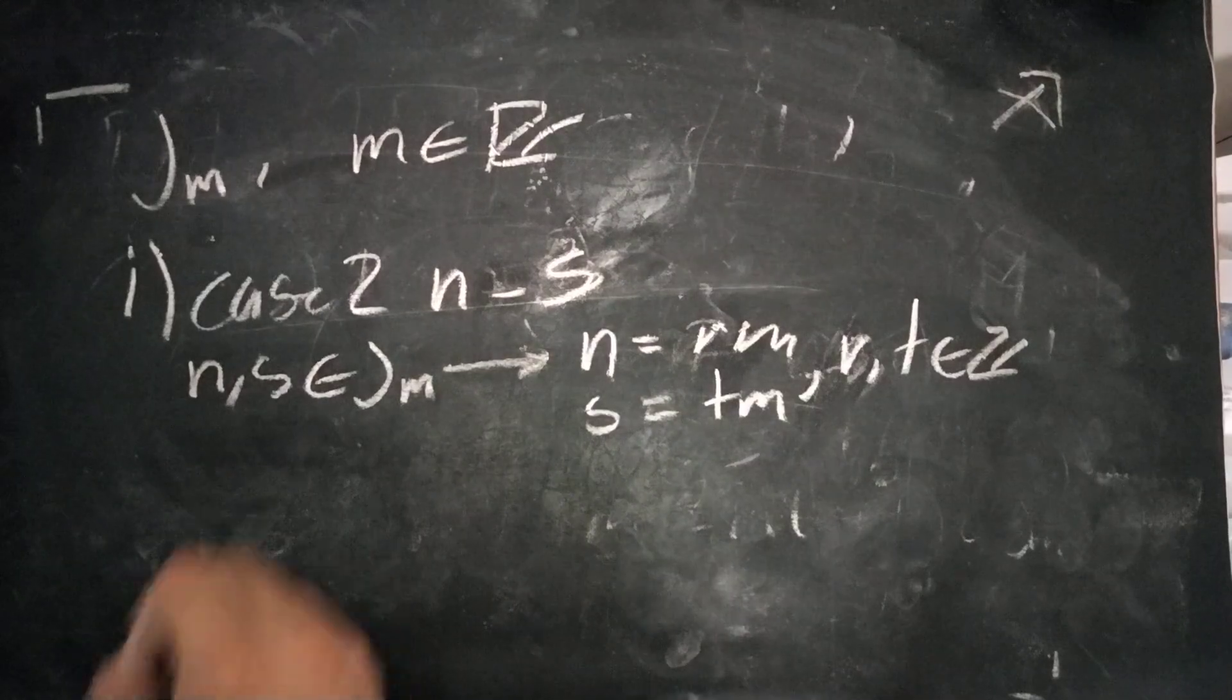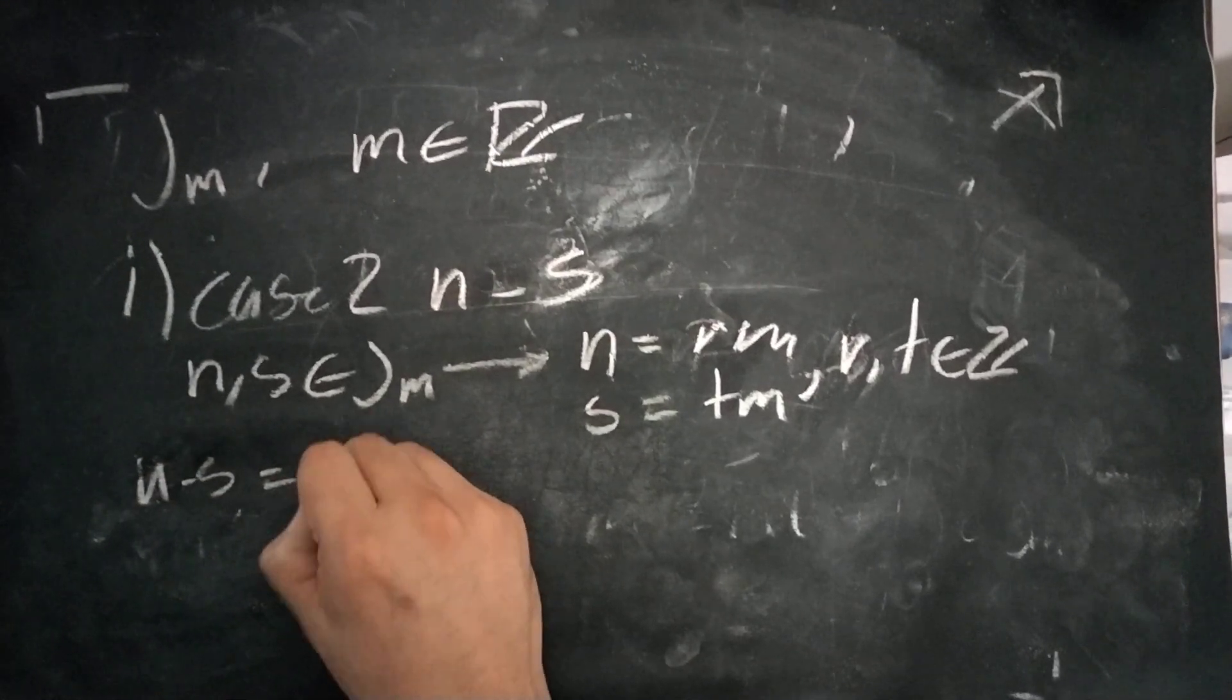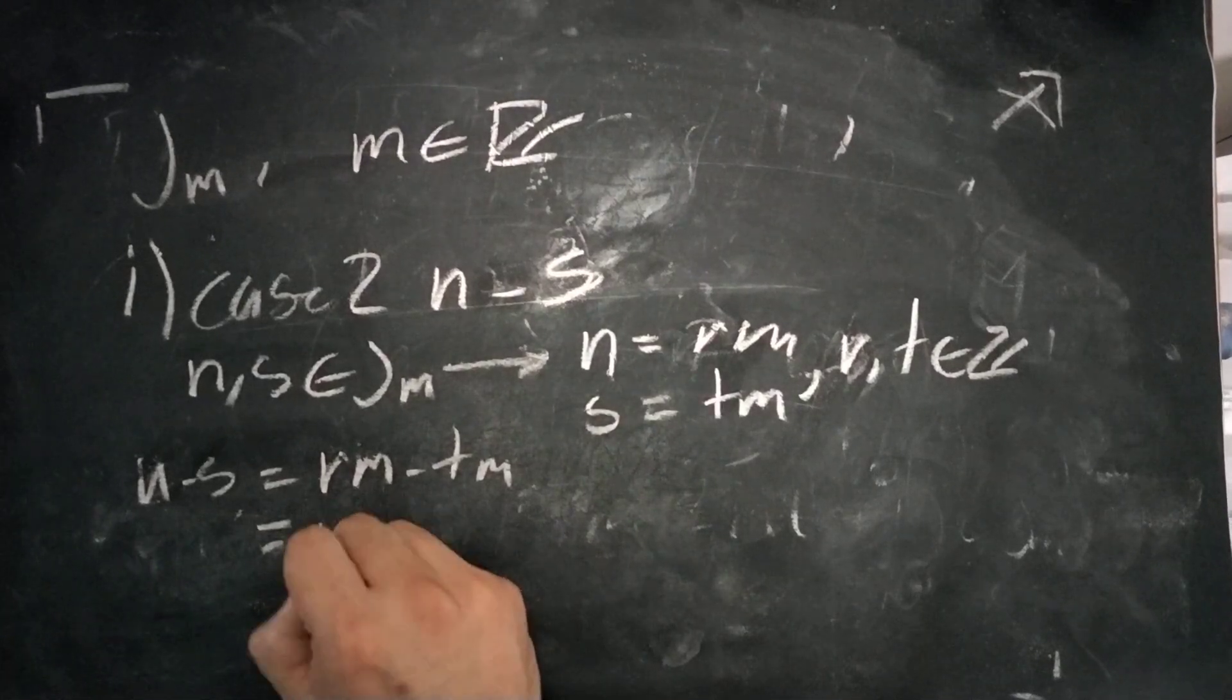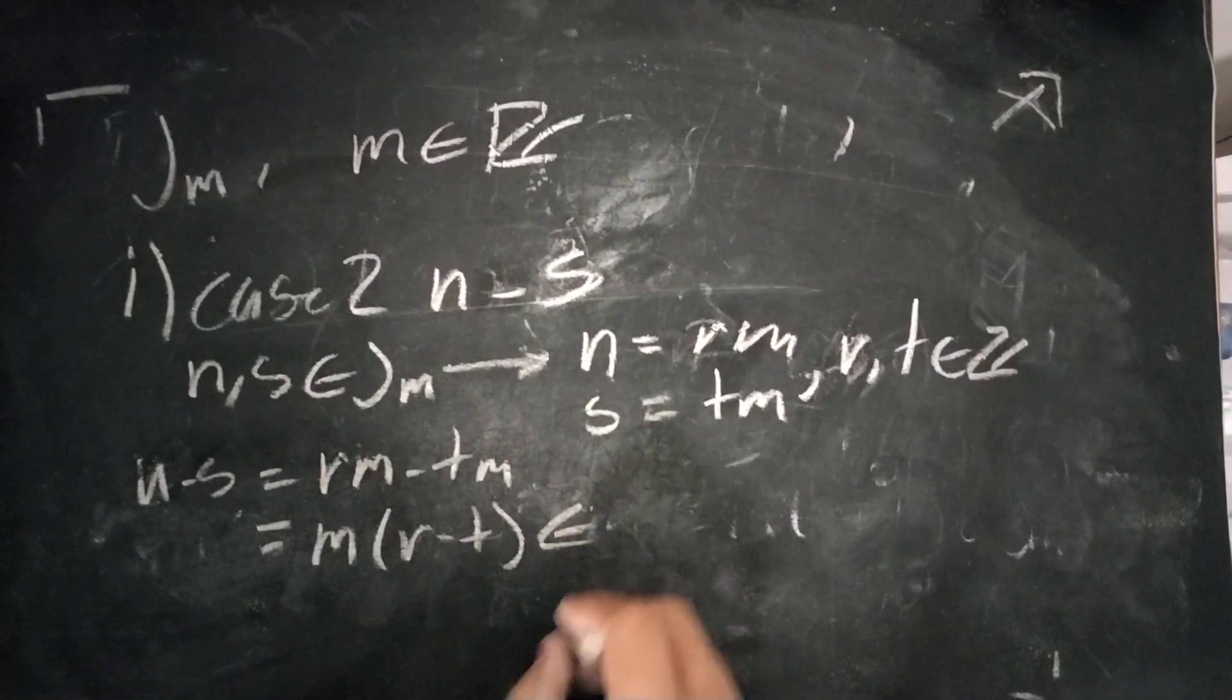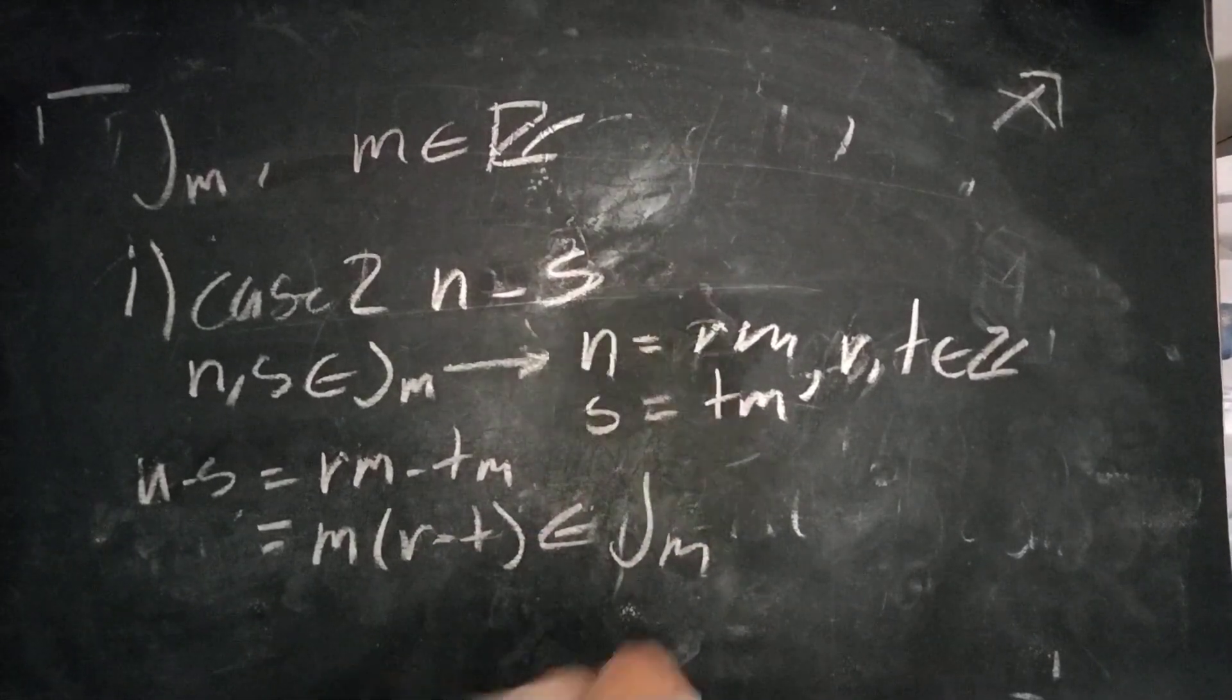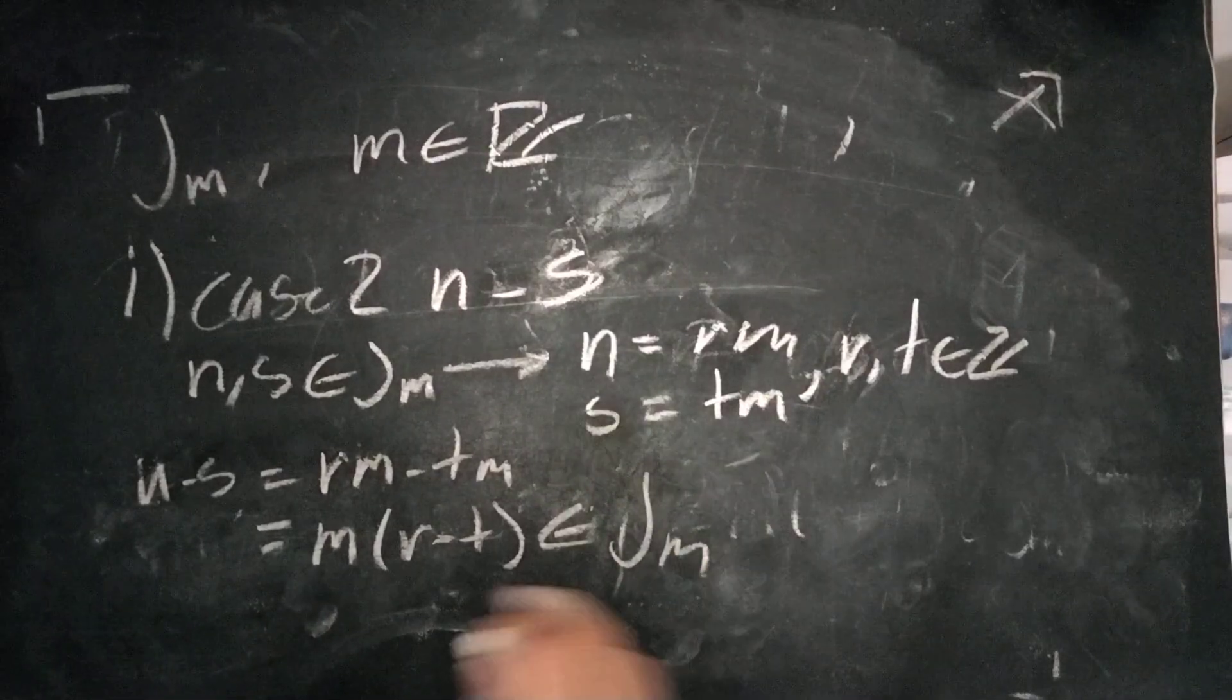We'll then subtract the two. We'll take n minus s is equal to rm minus tm, which is equal to, we can just factor out, r minus t times m, which is clearly also part of J of m, because subtraction is just addition, this is still an integer, and since this is just an integer times m, this is still within the multiples of J of m.